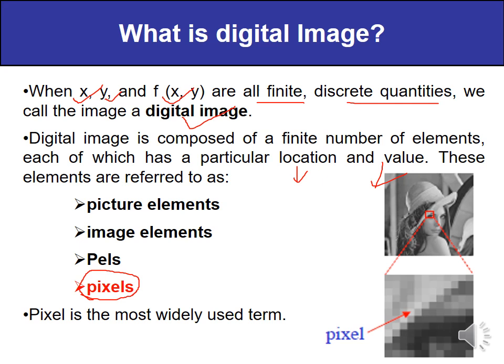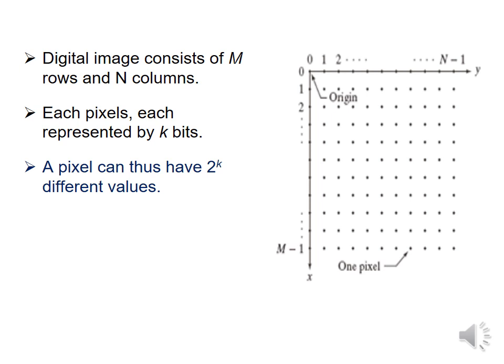Here you can see an image of a girl and its digital form is also represented. Images can be represented in the form of a matrix — a two-dimensional digital image with M rows and N columns. If we take a particular coordinate, say (2, 2), then f(2, 2) gives us the value of intensity at that point. The intensity at each pixel may vary from pixel to pixel. Each and every pixel is represented by k bits, so a pixel can have 2^k different values.